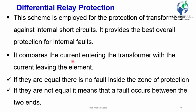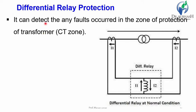The differential relay compares the current entering the transformer with the current leaving — the same as KCL, Kirchhoff's Current Law. If they are equal, there is no fault inside the zone of protection. If they are not equal, a fault has occurred between the two ends, and the relay will operate. It can detect any faults within the zone of protection, bounded by CT1 and CT2 on the primary and secondary sides.